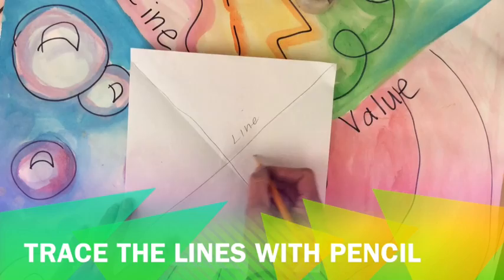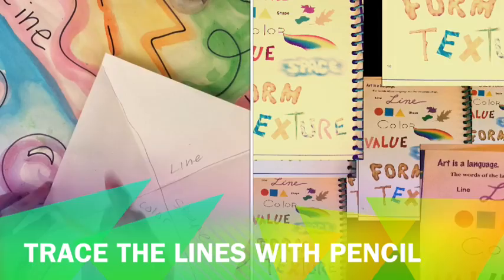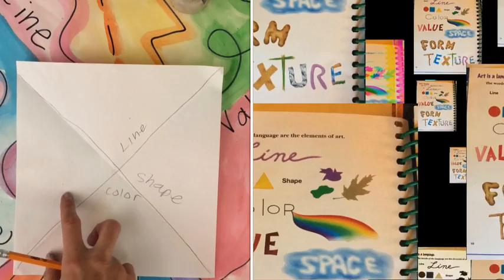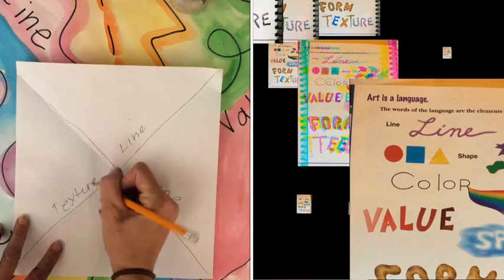And we are going to be using line, shape, color, and you can use value or form. So in this one I am going to put, let's see, maybe texture, that would be kind of cool. That would be really neat.